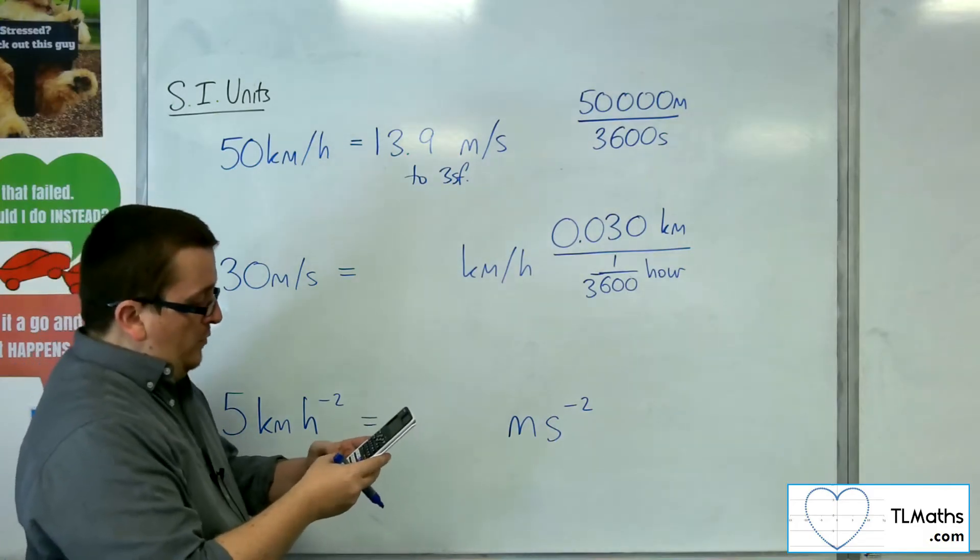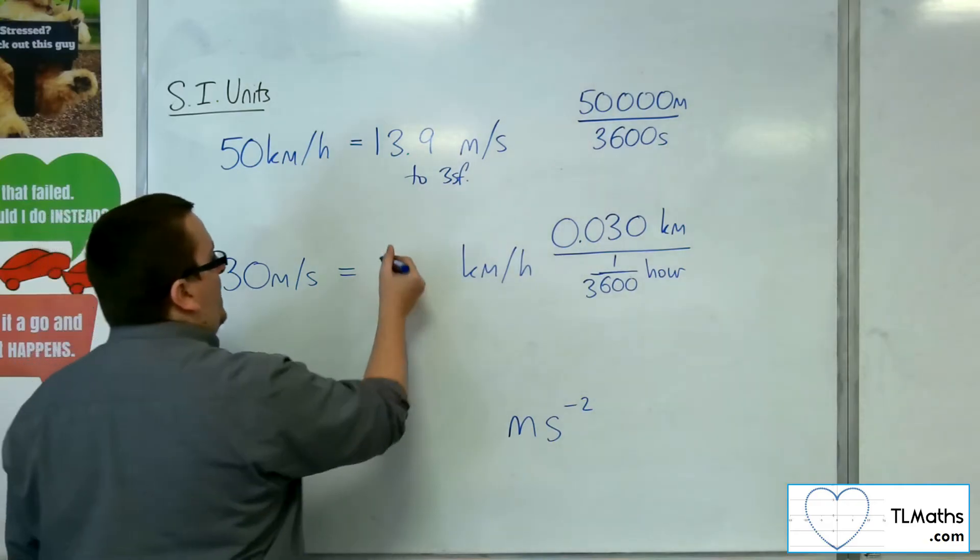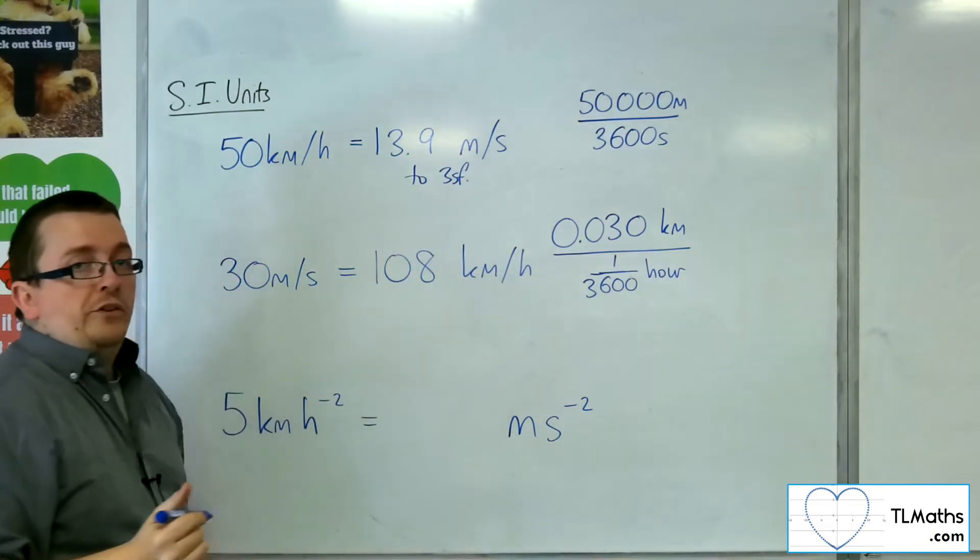Which is the same as 0.03 times 3,600, and that gets me 108 kilometres per hour.